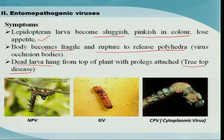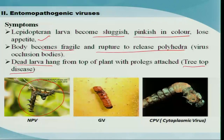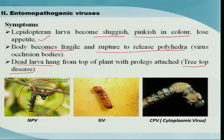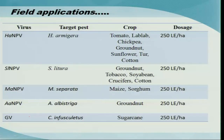NPV shows a very typical symptom called the 'tree-top disease.' Larvae infected by NPV will usually climb to the top of the tree, adhere to the substratum with their prolegs, and hang down — which is why it is referred to as tree-top disease.